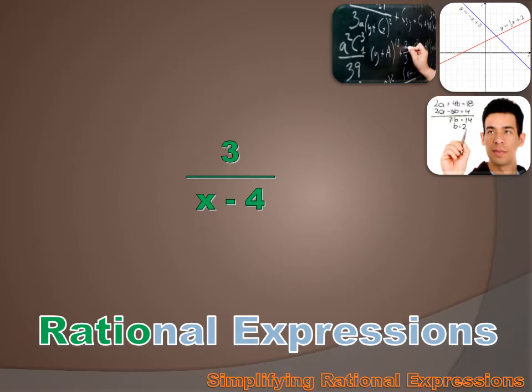Not every ratio is a rational expression. If my denominator was x minus x, it would always equal 0. So the expression 3 over x minus x would always be undefined. And because it's always undefined, it can't be a rational expression.